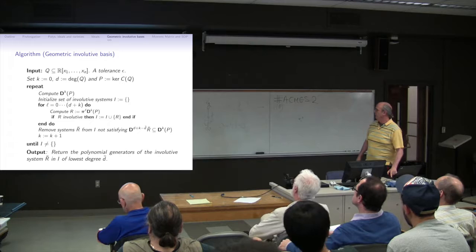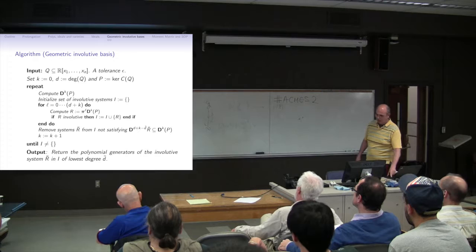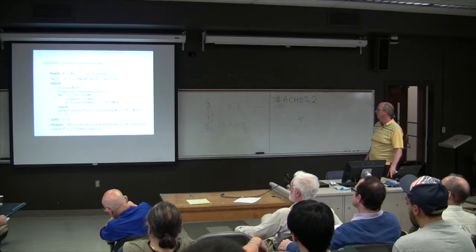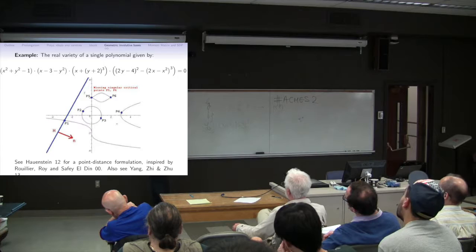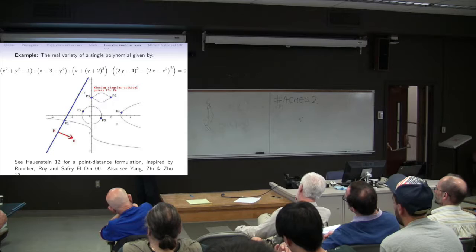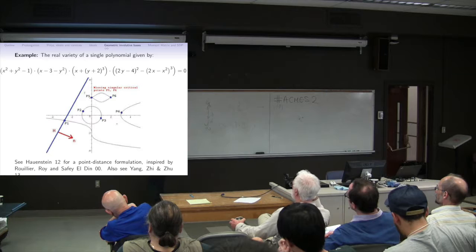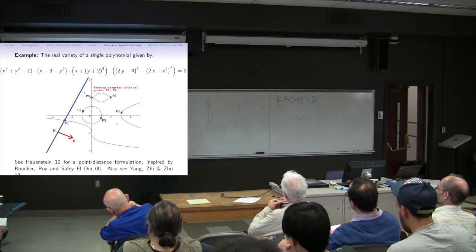And, that's just the technical stuff about involutivity. This is, basically just says, this is a very simple method. Another class of methods that's being developed in numerical real algebraic geometry, this is joint work with Wenrui Hao and Zhonggang Zeng, he initiated this method, is to take the witness point concept that's used in numerical algebraic geometry over C.